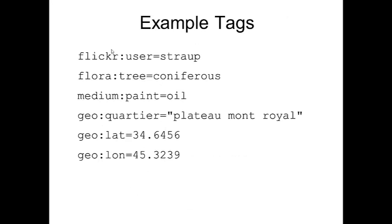Here are examples of different types of tags. The Flickr namespace has a user attribute you can set to your user ID. You could have a flora namespace with attribute 'tree' and value 'coniferous'. For paintings, a medium namespace where paint equals oil. From the Geo namespace: quartier for a geographic location name, and latitude and longitude. There are lots of different namespaces, lots of different tags and properties defined within each namespace.